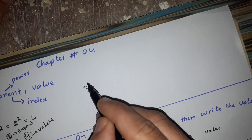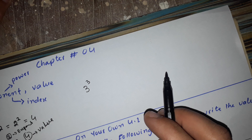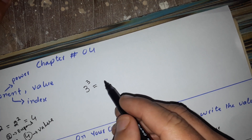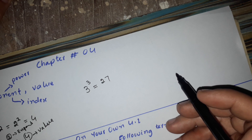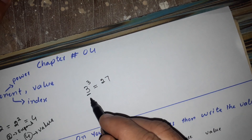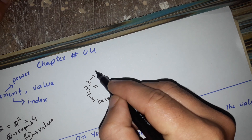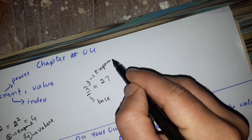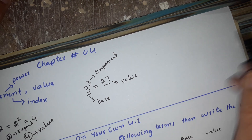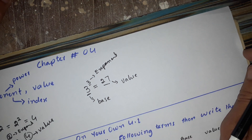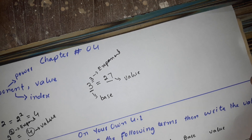Let's say 3 to the power of 3. The answer is 3 to the power of 3. The answer comes to a value — that means our base, exponent, and value. So the answer is the value.